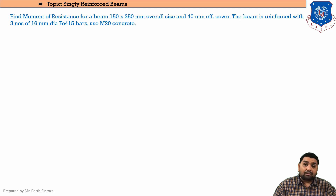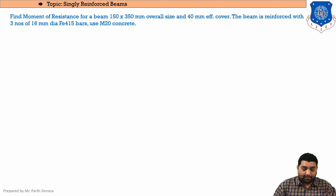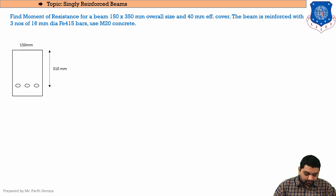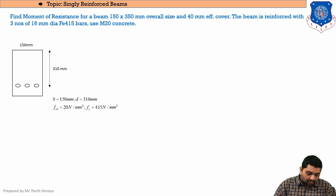Moving on to the next sum. The question: find the moment of resistance for a beam 150 mm × 350 mm overall size. Keep in mind, here overall size is mentioned, so the capital D is given, and effective cover is 40 mm. Cover is given because we need to find small d: small d = overall depth − cover = 350 − 40 = 310 mm. The beam is reinforced with three numbers of 16 mm diameter bars, and we need to use M20 concrete. So the width is 150 mm and the effective depth is 310 mm.